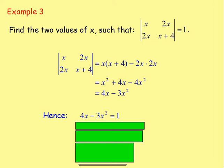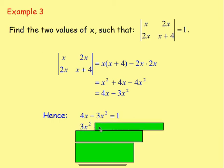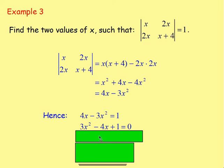We want to find the values of x when the determinant equals 1. If we take everything to one side and set it equal to 0, we add 3x squared to both sides and subtract 4x, giving us 3x squared minus 4x plus 1 equals 0.